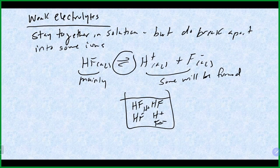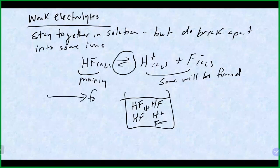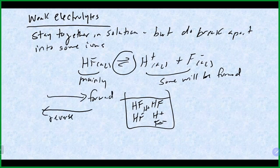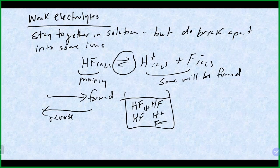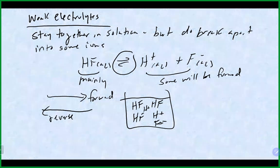Weak electrolytes can be recognized because they have a reversible arrow pointing in both directions — a forward direction toward products and a reverse direction back to reactants. As products form, they come back together and re-form reactants, reaching chemical equilibrium, where the rate of the forward and reverse reactions are equal. A strong electrolyte completely breaks apart with many ions; a weak electrolyte produces a few ions but mainly stays together.